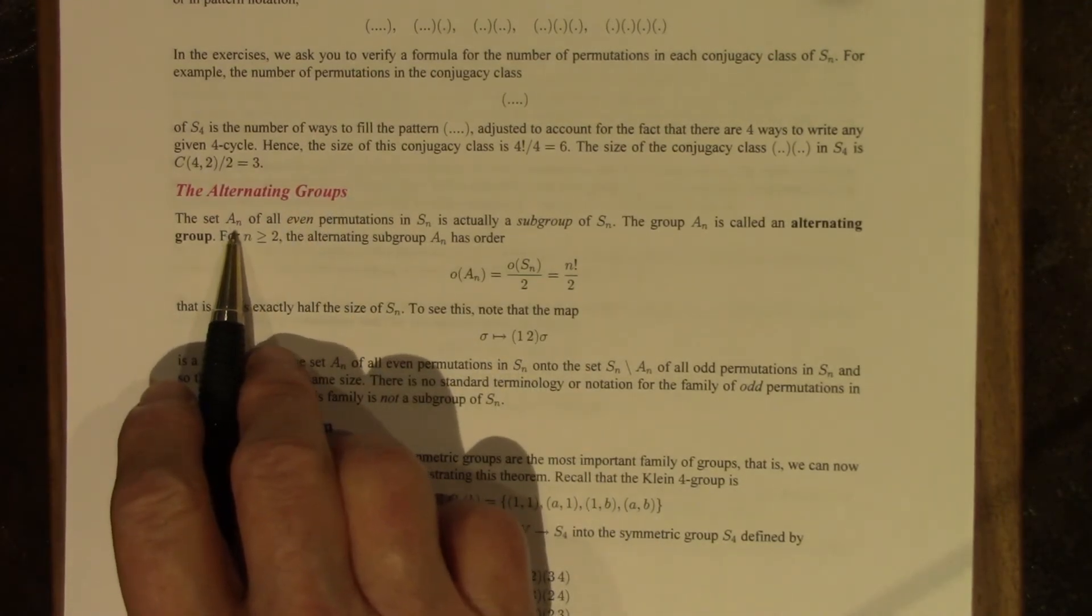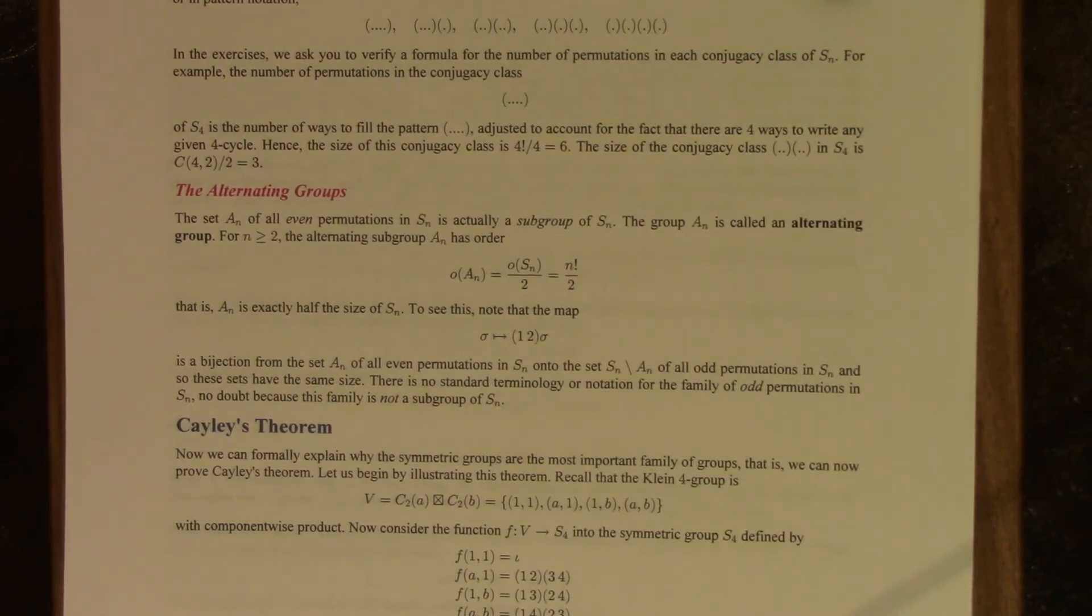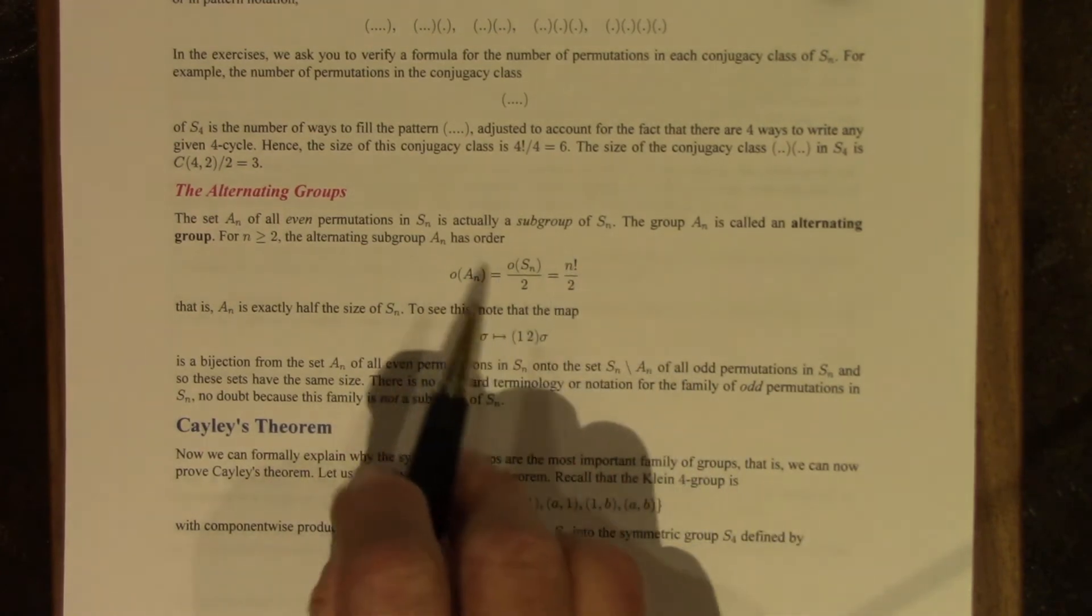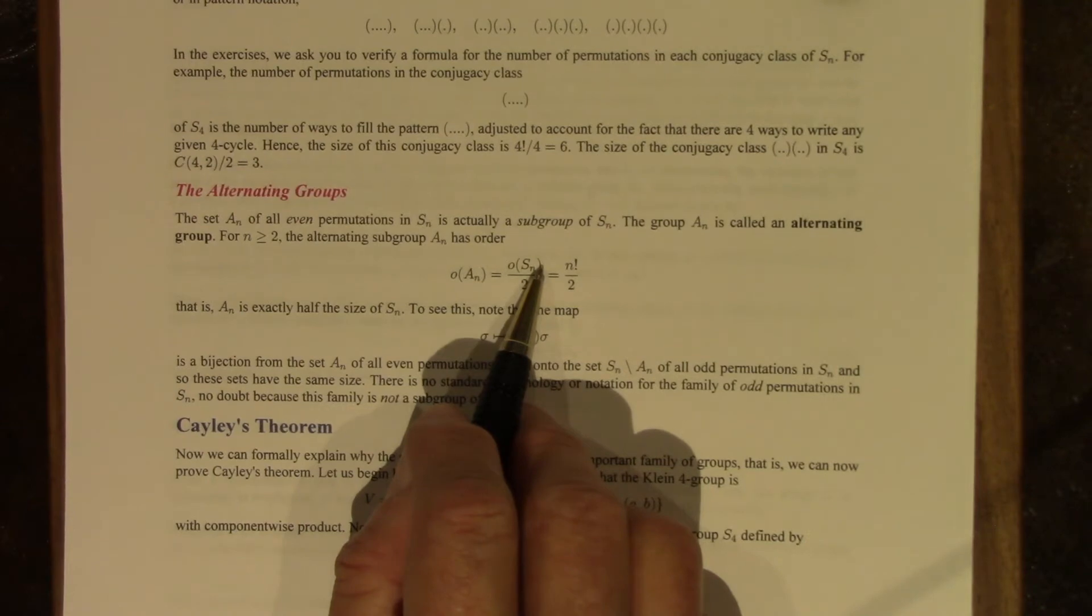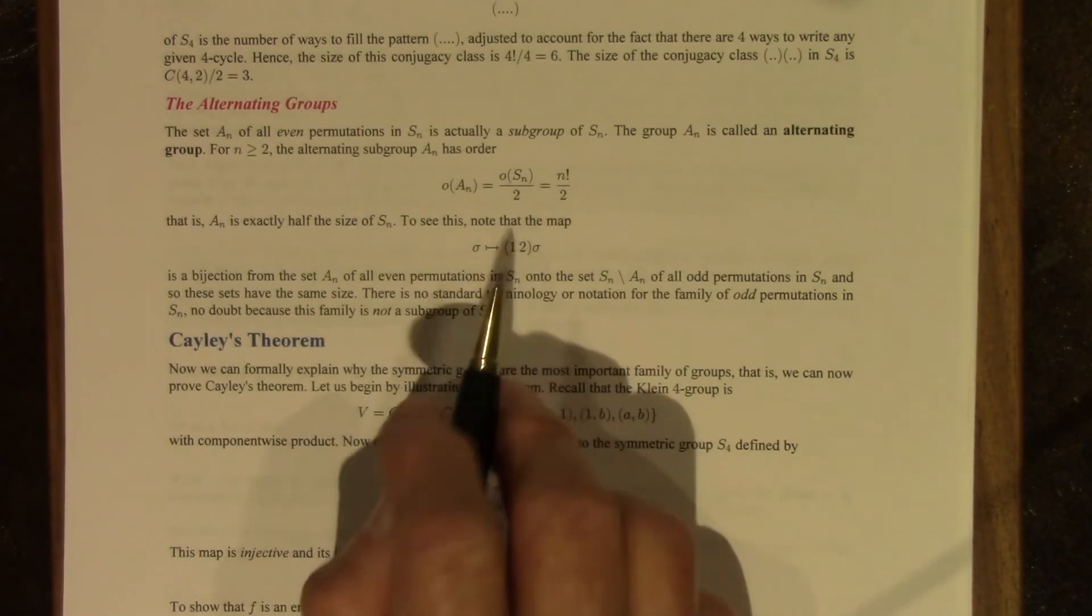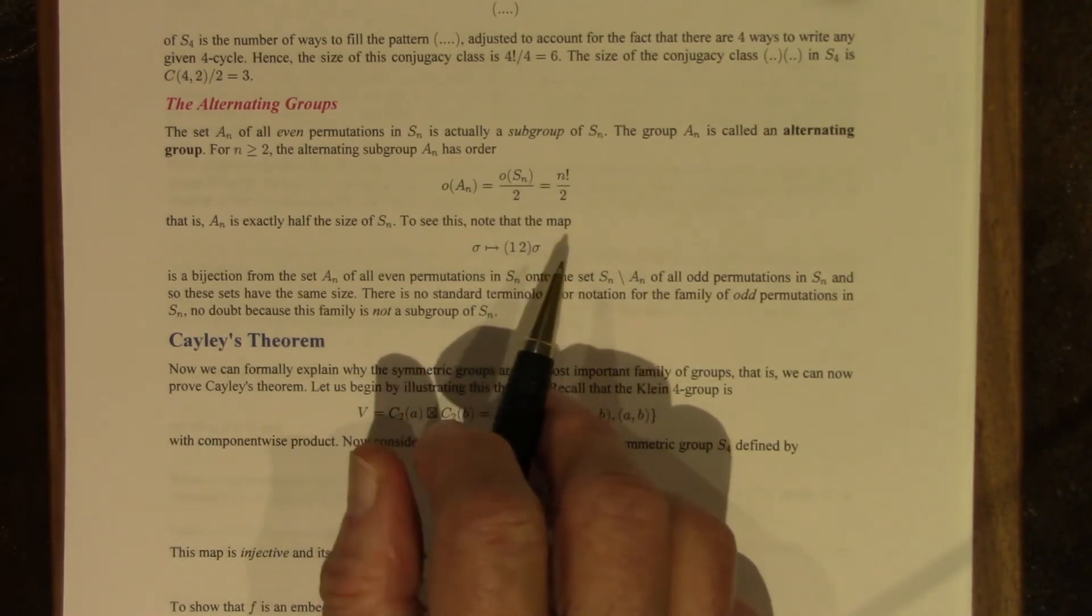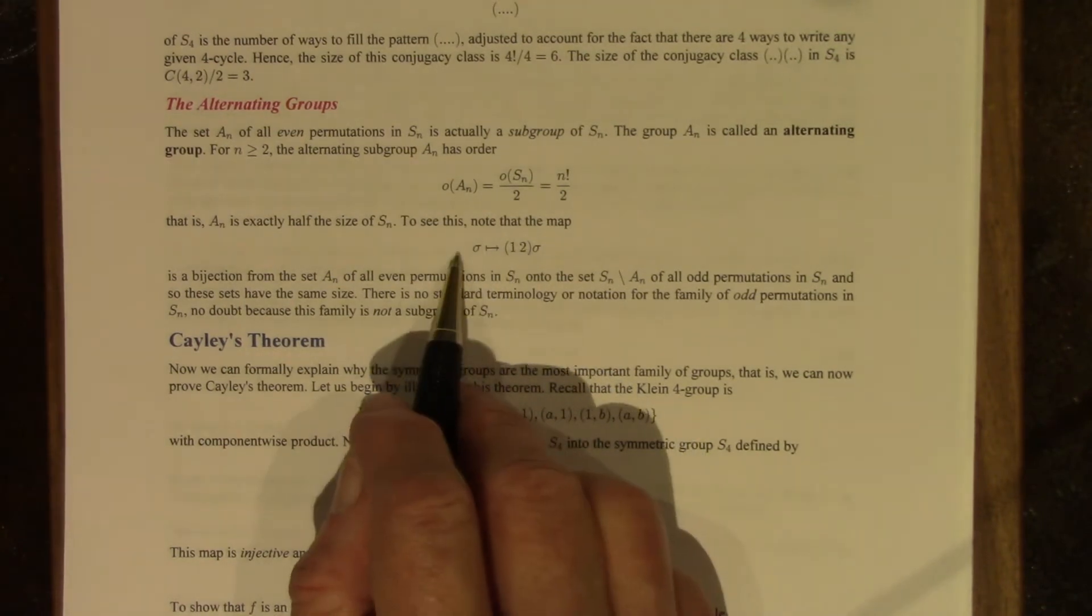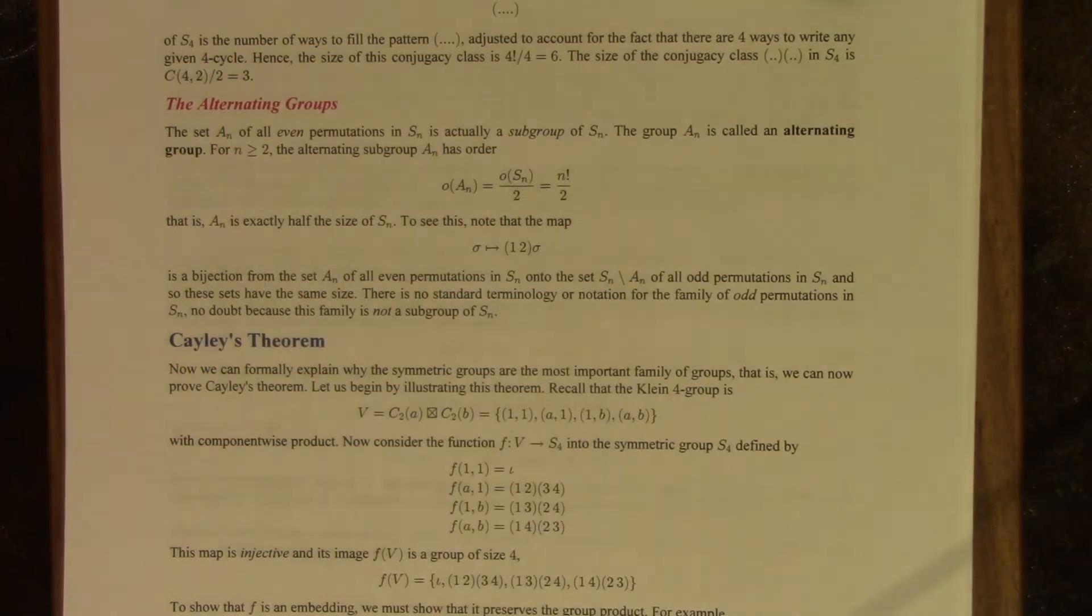The set An, denoted commonly by An, of all even permutations in Sn is a subgroup of Sn. It's called the alternating group, which is why I use the letter A. And for n bigger than or equal to 2, the order of the alternating group is one-half the order of Sn, the full group. And a relatively easy way to see that is to consider this map that sends sigma to the product transposition 1, 2 times sigma. This is a bijection from the even permutations to the odd permutations. If sigma is even, then it's a product of an even number of transpositions, therefore this is a product of an odd number of transpositions. So all you have to do is show this is a bijection, which is pretty straightforward.